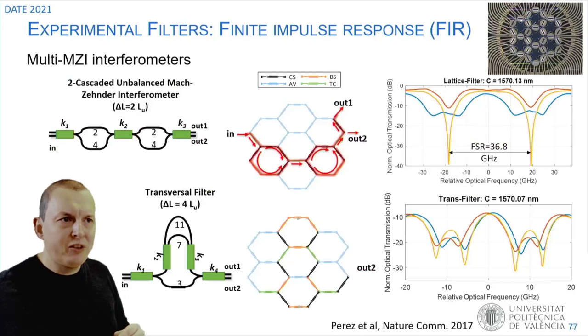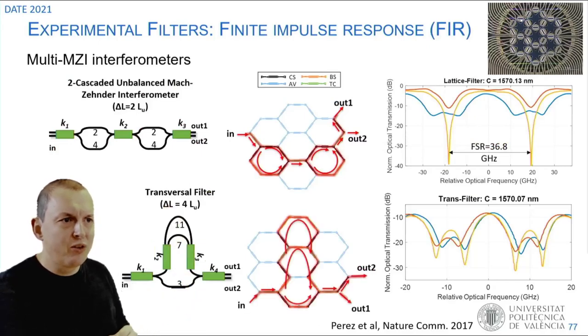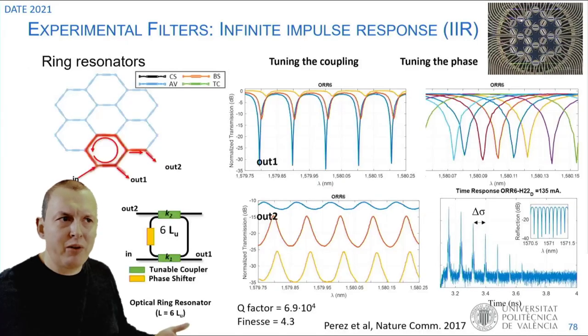You can implement filters like these Mach-Zehnder filters, or this three path filter at the bottom. You can tune the performance of this filter, like the slope and the position of the filter peaks. And you can make ring resonators, where you can again tune the exact properties of the ring.